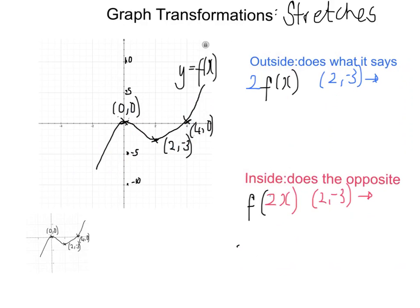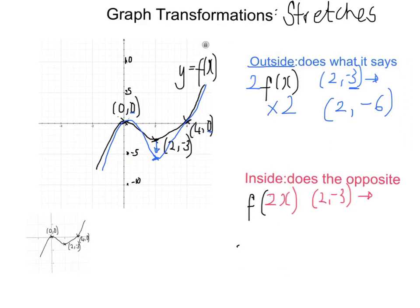Now let's look at stretches. For the outside type, the stretch factor is on the outside — so a scale factor of two. Outside only changes the y coordinate, so (2,−3) has its y coordinate multiplied by two, giving (2,−6). The coordinates at zero stay pinned since zero times two is still zero. The curve is stretched by a scale factor of two in the y direction.